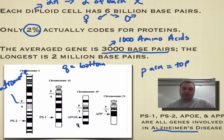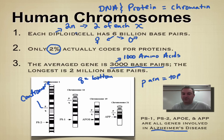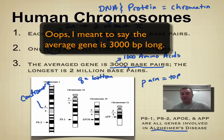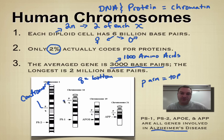So what I want you to remember: we are diploid, we get two of each chromosome — one from mom, one from dad. The average protein is 3,000 base pairs long; the longest gene here is 2 million base pairs — that's one long gene. With your chromosomes, you have a centromere somewhere on the chromosome, above which is your P arm, and below which is your Q arm. Until our next episode, we're going to catch you on that flip side.